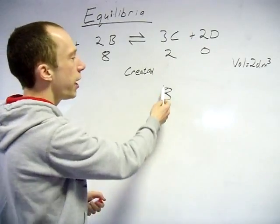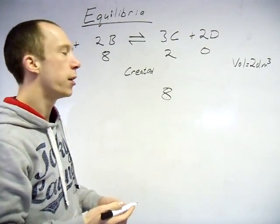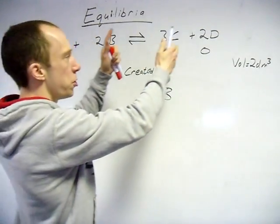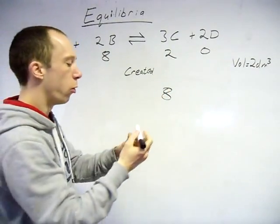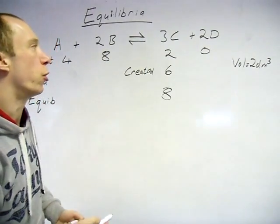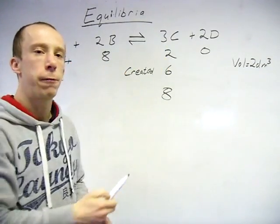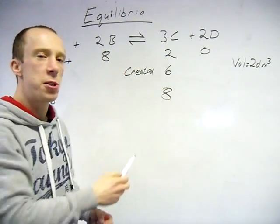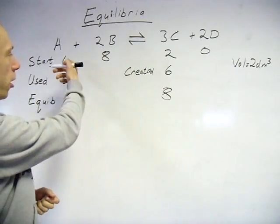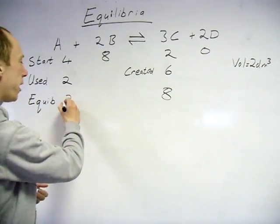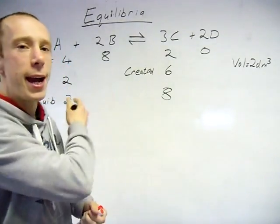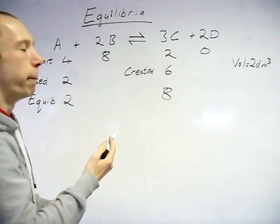So we can see we've created 6 moles of C. We need to look at the ratio to work out the others — reactants are going to be used up to form products. Look at the ratio between A and C: it's a 1 to 3 ratio. So every time we use up one mole of A, we form 3 moles of C. If we've formed 6 moles of C, we must have used up 2 moles of A. Started with 4, used up 2, so at equilibrium we finished with 2 moles of A.